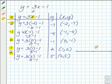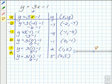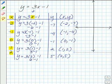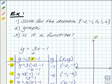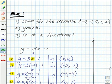Now let's go ahead and graph. Here I've drawn a coordinate plane for you, and we'll just graph our ordered pairs here. So we'll start off by graphing (negative 2, negative 7).